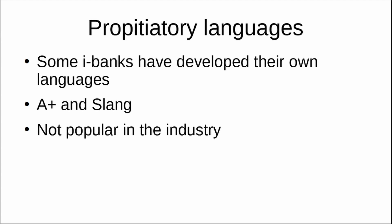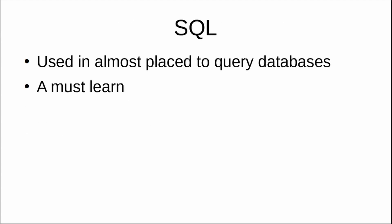Some investment banks have developed their own proprietary languages. Companies like Morgan Stanley and Goldman Sachs have their own proprietary languages that are not known to people outside those organizations — A+ and Slang are two such languages. Frankly, these languages are used internally at top banks, but nobody will expect you to know them since they can only be used within those organizations. People actually prefer using more popular languages like C++ and Python even within Morgan Stanley and Goldman Sachs.